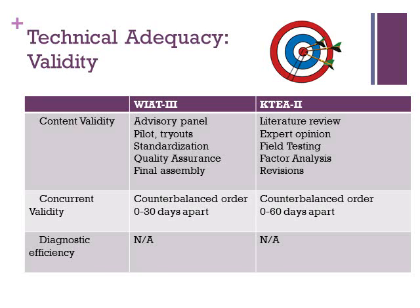To address concurrent criterion validity, the WIAT-3 was administered along with several other achievement tests, with students tested from the same day up to 30 days apart from taking the WIAT-3. KT-2 students were tested from the same day up to 60 days apart. In each concurrent study, the WIAT-3 and other tests were administered in counterbalanced order — approximately half of the cases took the WIAT-3 first and the other half took it second. The same counterbalanced process occurred during standardization of the KT-2.